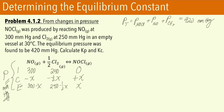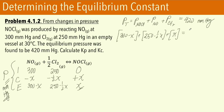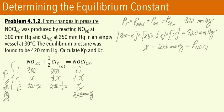The total equilibrium pressure equals the sum of all equilibrium partial pressures: (300 minus x) plus (250 minus 0.5x) plus x equals 420 mmHg. Solving for x gives 260 mmHg, which is the partial pressure of NOCl at equilibrium. So the partial pressure of NO at equilibrium is 300 minus 260 equals 40 mmHg, and the partial pressure of Cl2 is 250 minus 130 equals 120 mmHg.